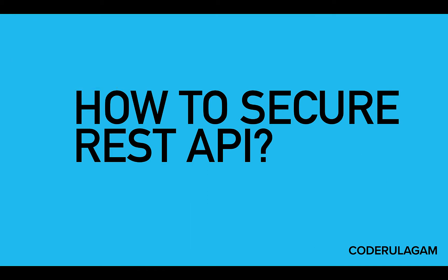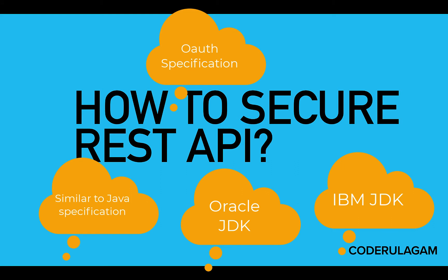If you look at a PDF document, where a bunch of people say these are the rules — we can put it in a Java specification. Java specification is the JDK. There are different vendors for the JDK implementation — Oracle JDK, IBM JDK. They are all different companies, and the specification is based on the code and how you implement it.